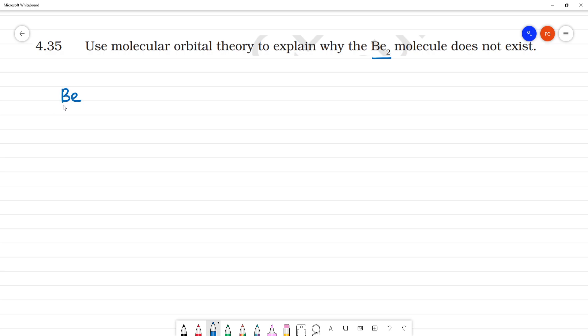Beryllium is atomic number 4. What is the electronic configuration? 1s² 2s². How many electrons? 4 electrons. One beryllium is 4 electrons, so two beryllium is 4 plus 4, totally 8 electrons.